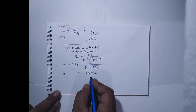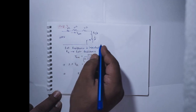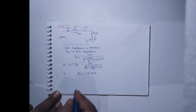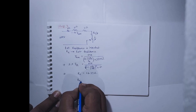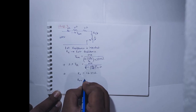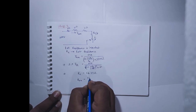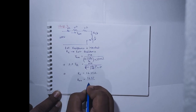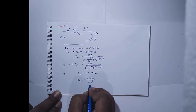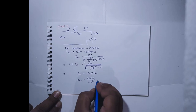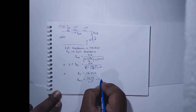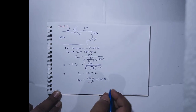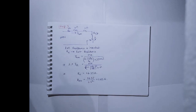Since 16.37 ohms is the referred value, the actual external resistance Re_actual equals 16.37 divided by the stator-to-rotor turns ratio squared, which is 2.5², giving Re_actual = 2.62 ohms.